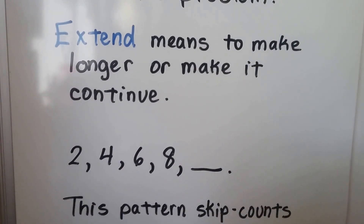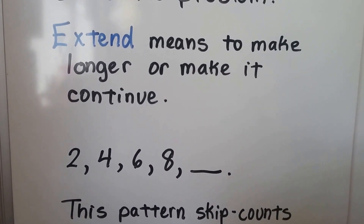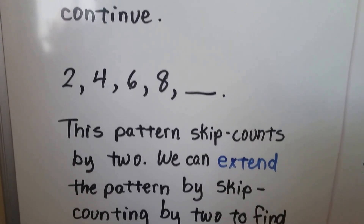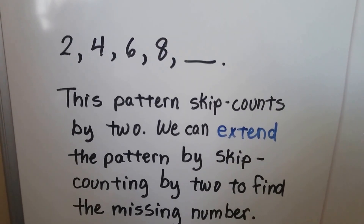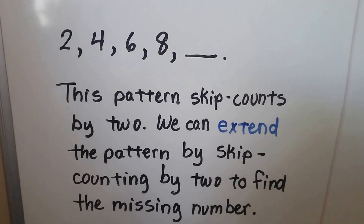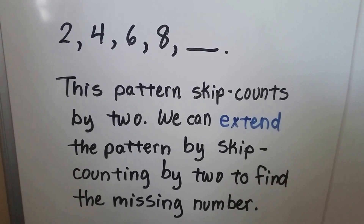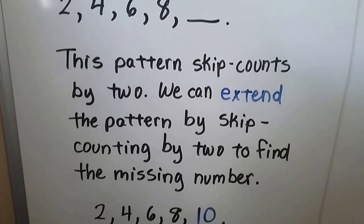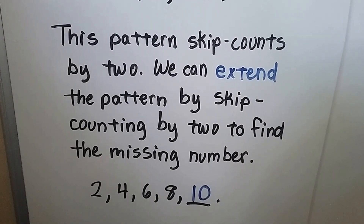We see 2, 4, 6, 8, and a missing number. This pattern skip counts by 2. We can extend the pattern by skip counting by 2 to find the missing number. 2, 4, 6, 8, 10.